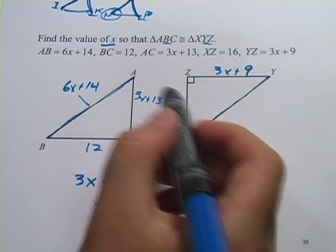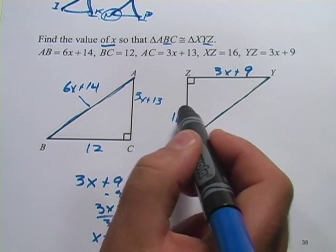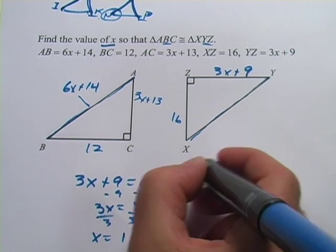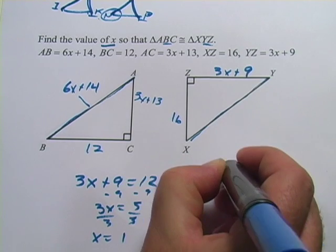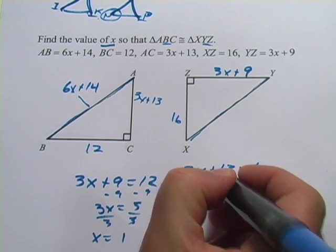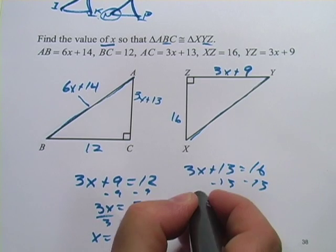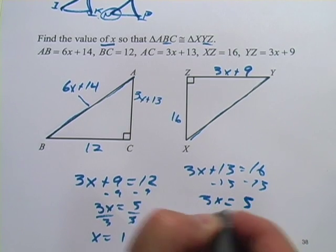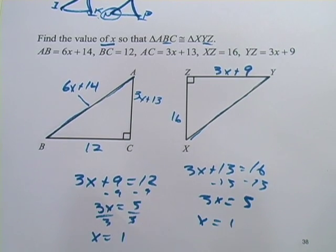Let's see if it comes out the same way over here. We've got 3x plus 13 equals 16. So 3x plus 13 equals 16. Subtract 13. 3x equals 3. Again, we get x equals 1. So either pair that you chose would come out with a correct answer.